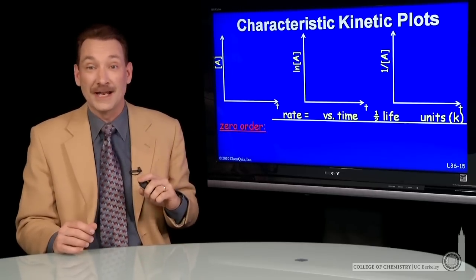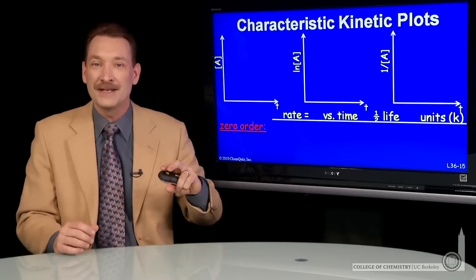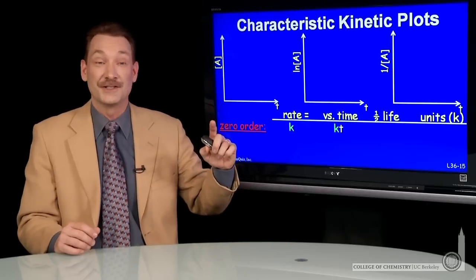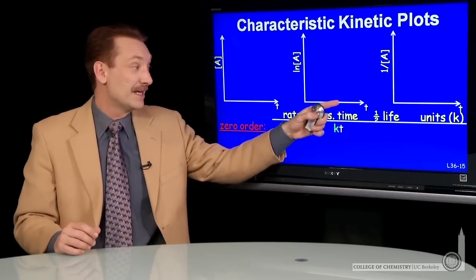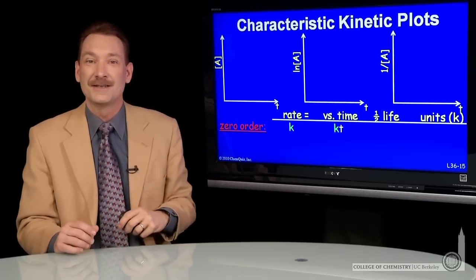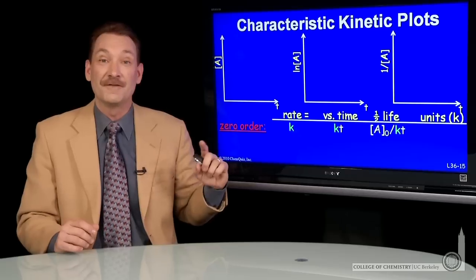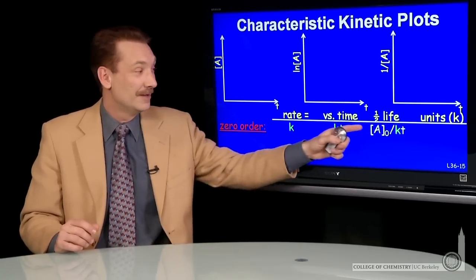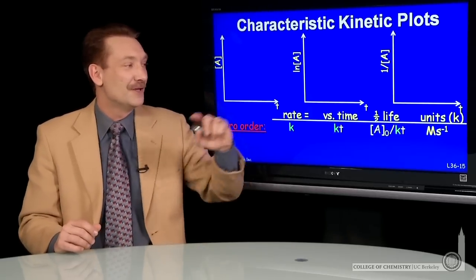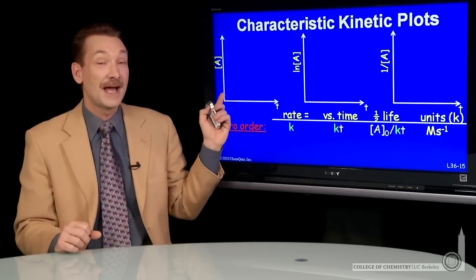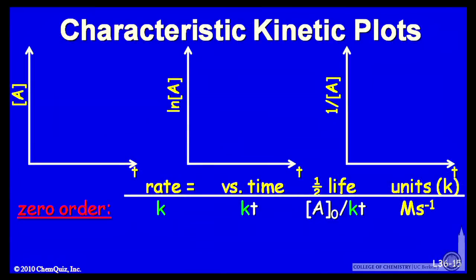For instance, zero order kinetics means the rate is independent of any concentration — the rate is just a constant. If you plot concentration versus time, concentration is given by k times t, just a constant times time. The half-life of a zero order chemical reaction is given by the initial concentration divided by k, and the units of the rate constant are molar per second. If I plot concentration versus time for zero order kinetics, I get a linear plot.